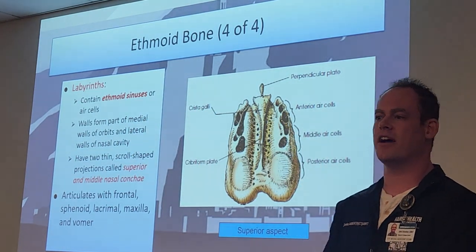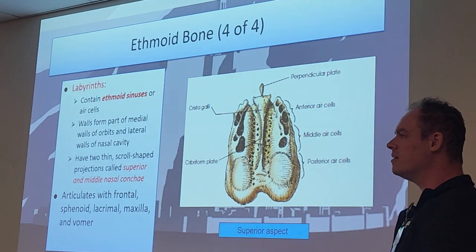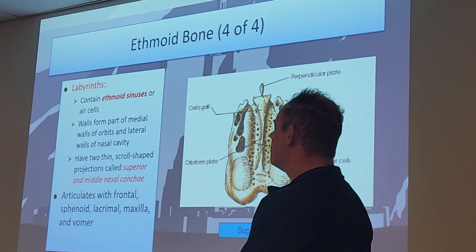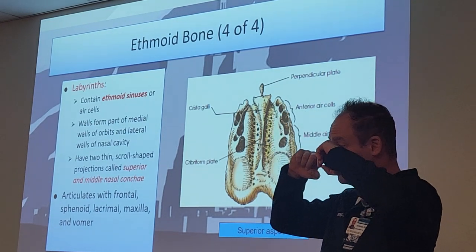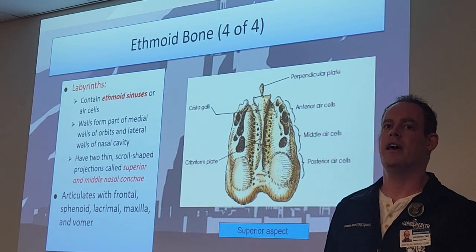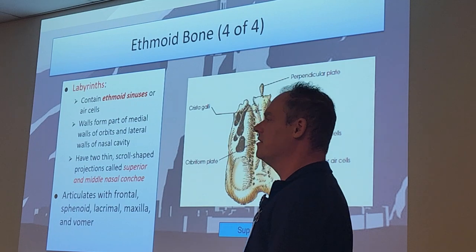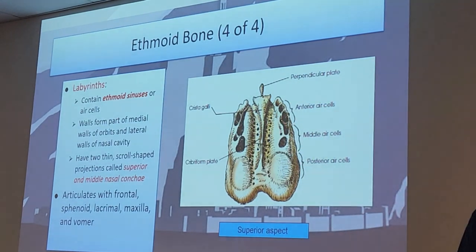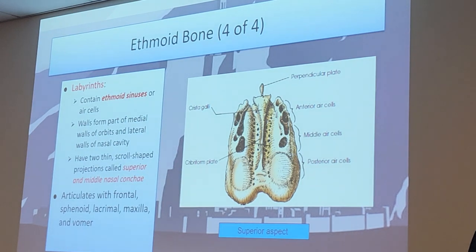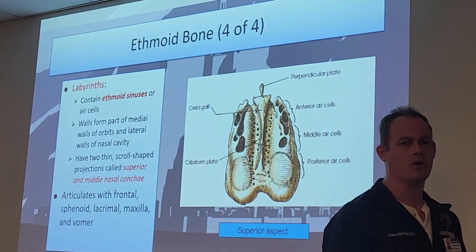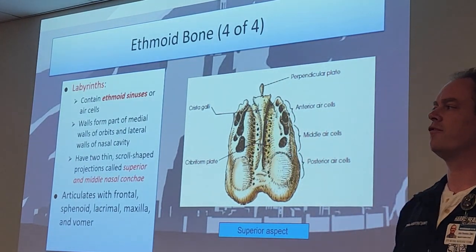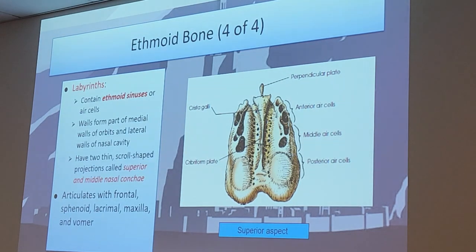The labyrinths contain the ethmoid sinuses. The walls of the ethmoid bone form the medial walls of the orbit - that's the area around your tear ducts. The lateral walls form the walls of the nasal cavity. It also contains those projections called the superior and middle nasal conchae - only superior and middle; the inferior nasal conchae are their own separate facial bones. Articulation points include the frontal, sphenoid, lacrimal, maxilla, and vomer - two cranial bones and three facial bones.